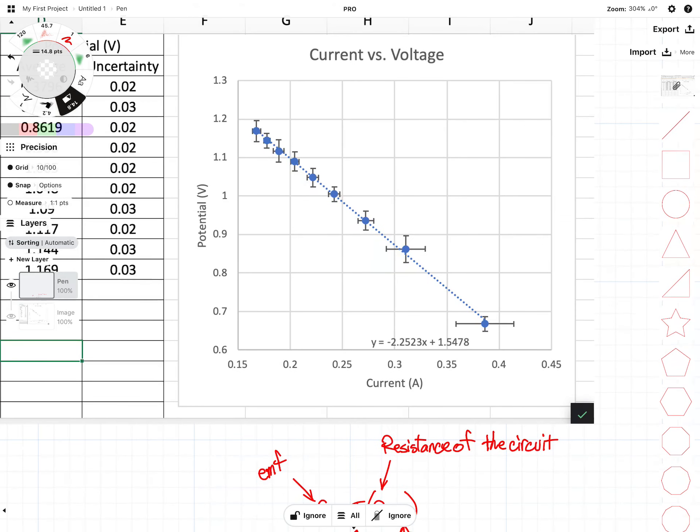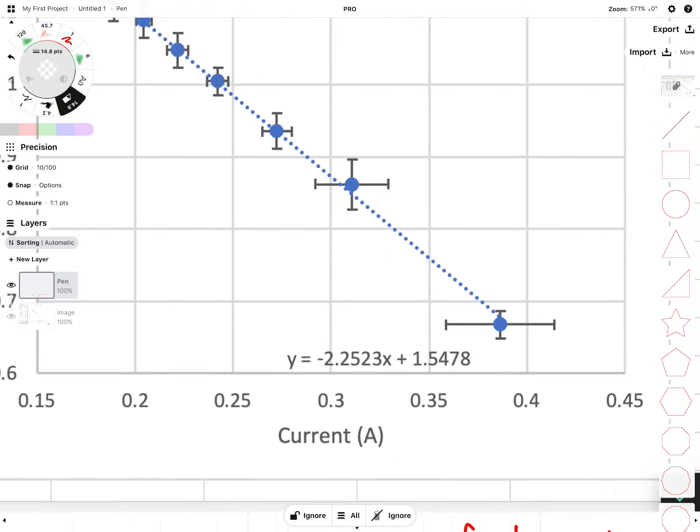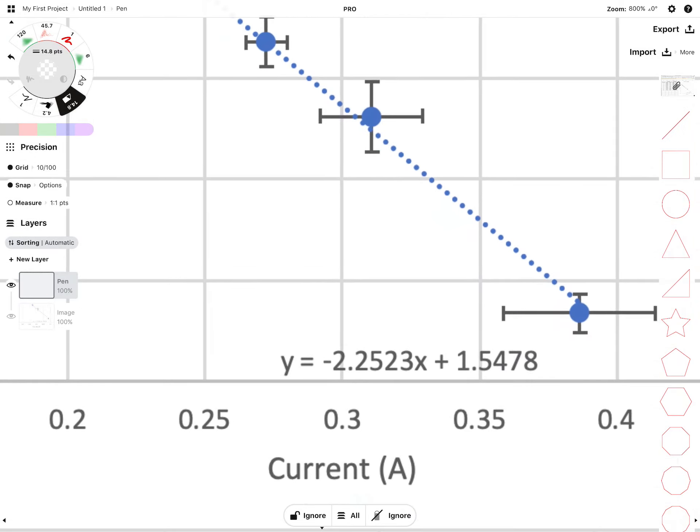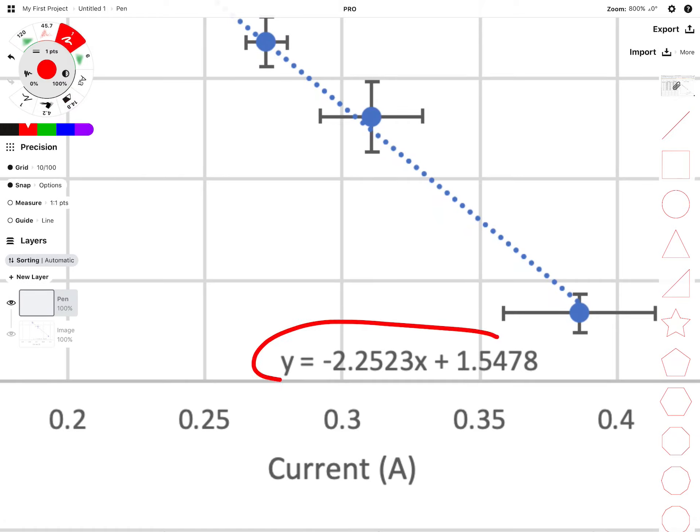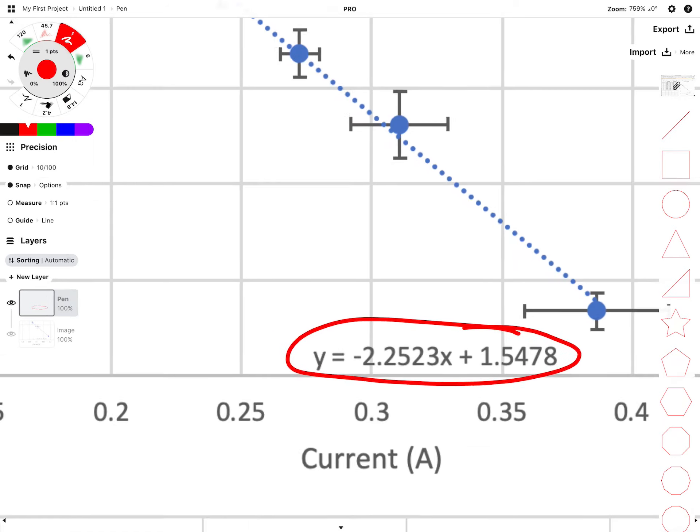After you insert your line of best fit, you're going to find that you have an equation that looks something like this. Because you have simulated data, there is a very good chance that your equation is going to look quite a lot nicer than this equation.